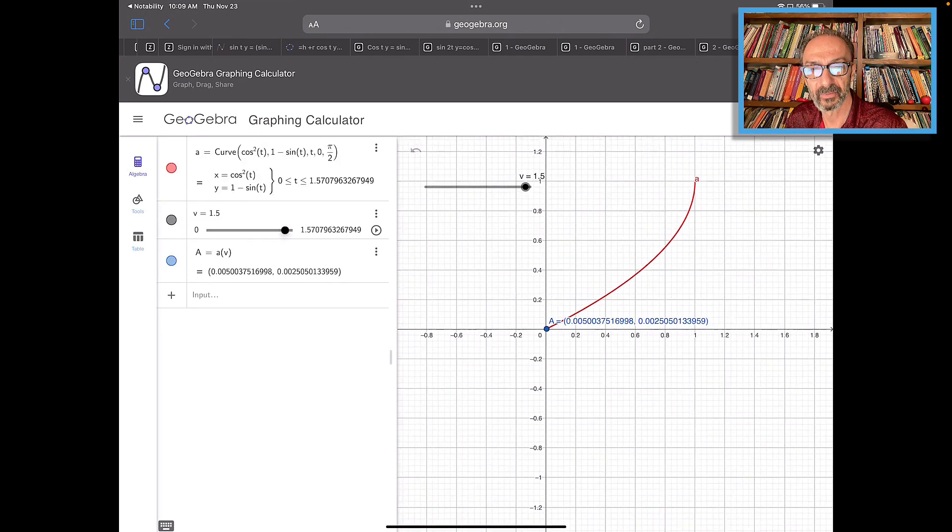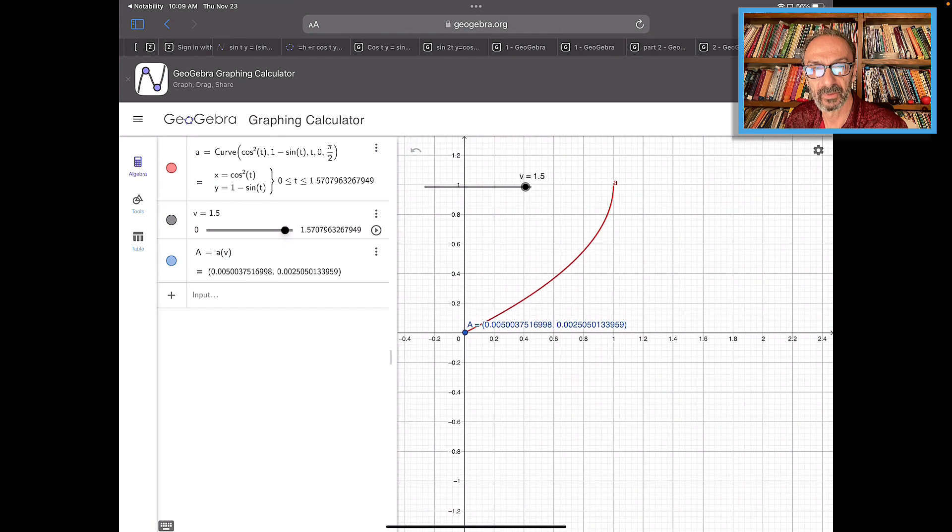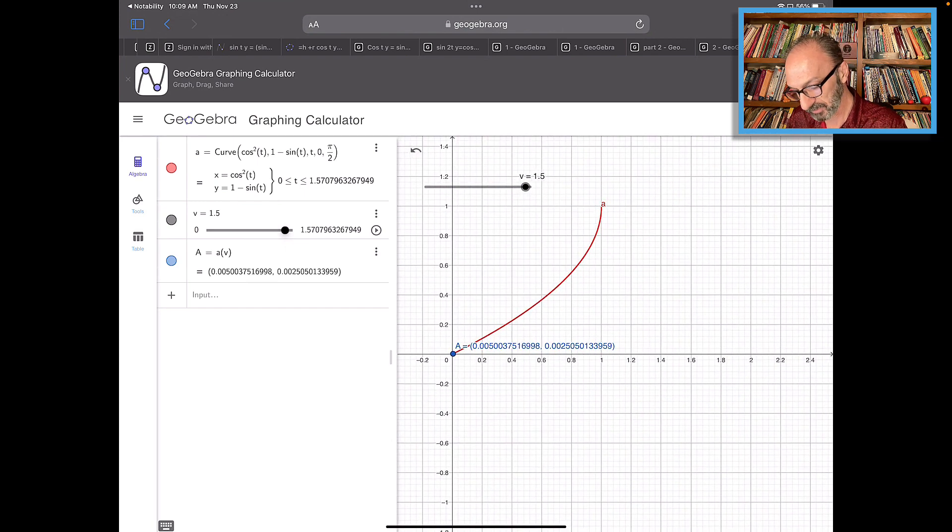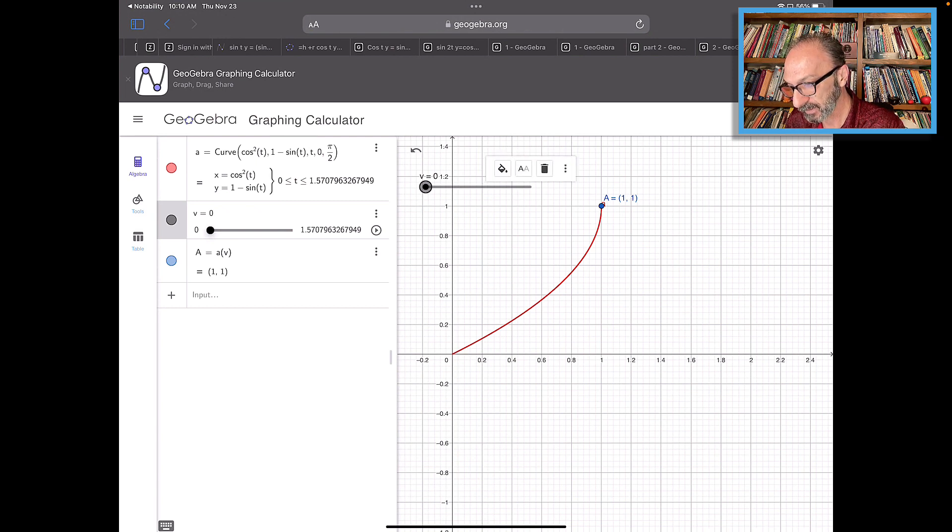This is the graph. As you can see, we're going from 1, 1 on top all the way down, but I'm gonna take the slider all the way to the left to start at t equals zero. When t equals zero, a equals 1, 1, and you could see that I have the curve with the x coordinate cosine squared, the y coordinate one minus sine, and the parameter t going from zero to π over 2. Here we go.